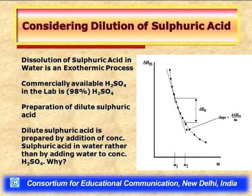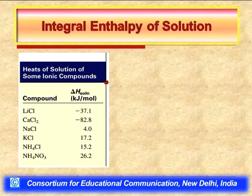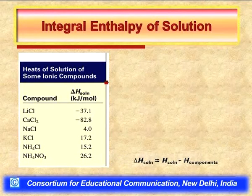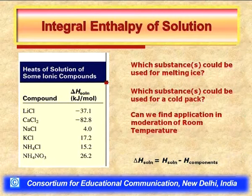Turning to experimental observations: a tabulation of enthalpy of solution data for several salts — lithium chloride (−37.1 kJ/mol), calcium chloride, sodium chloride, potassium chloride, ammonium chloride, and ammonium nitrate — provides the basis for answering practical questions. For example: which substance could be used for melting ice?